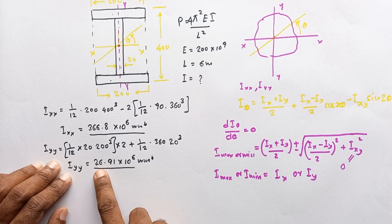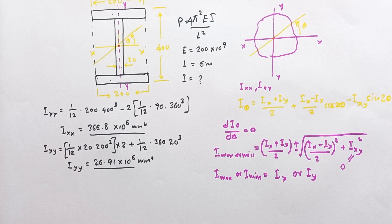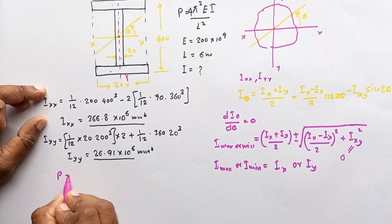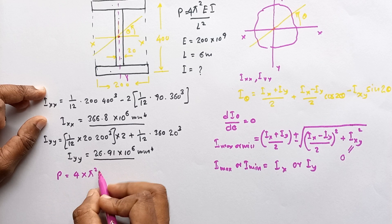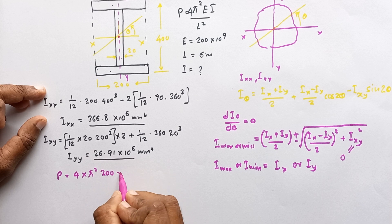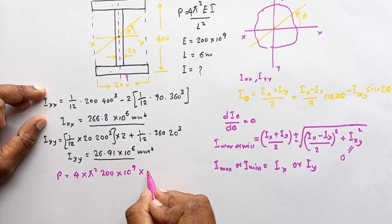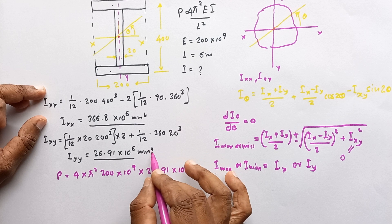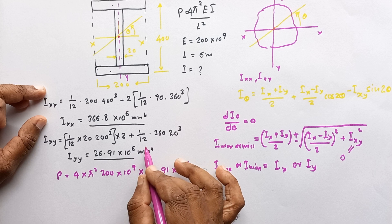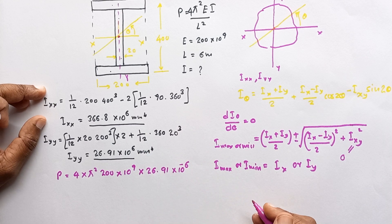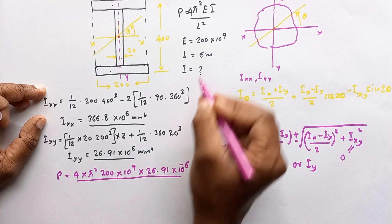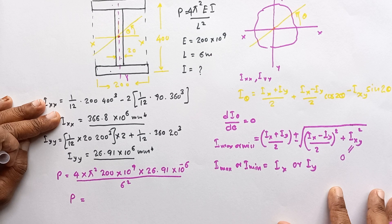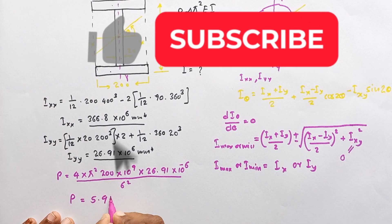We now have both I values. The minimum is around the YY axis: I_yy = 26.91 × 10⁶ mm⁴. Substituting into the buckling load equation: P = 4π² × (200 × 10⁹) × (26.91 × 10⁶ × 10⁻¹²) / (6²). The Euler buckling load for this problem is equal to 5.9 MN (mega-newton).